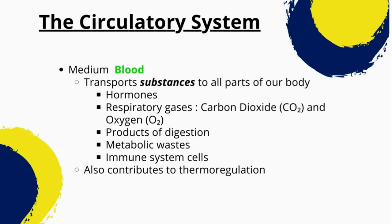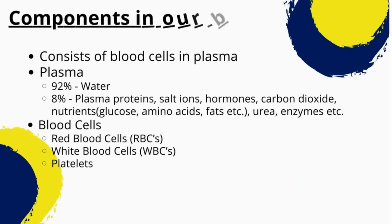Blood plays a crucial role in the circulatory system by transporting oxygen, nutrients, and waste products between the heart, the cells and tissues of the body, and the lungs. Components in the human blood include plasma and blood cells. There are three types of blood cells: red blood cells (RBCs), white blood cells (WBCs), and platelets. Plasma is a yellowish fluid that makes up about 55% of the total volume of blood and contains nutrients, hormones, and waste products. Red blood cells carry oxygen to the cells and tissues, while white blood cells help to fight infections. Platelets are involved in the process of blood clotting.